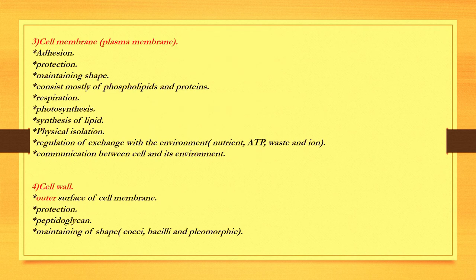Third, cell membrane. It consists of proteins and phospholipids and helps in maintaining the shape of the cell. It also protects from the external environment and assists in respiration through the mesosomes. The lipid is manufactured in the cell membrane, and also there is an important property.